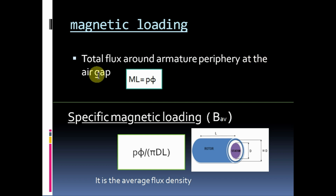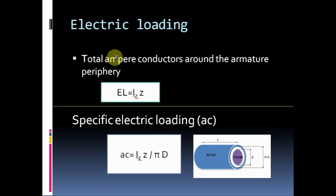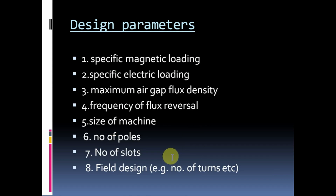Magnetic loading is the total flux around armature periphery at the air gap. ML equals P into Phi. Specific magnetic loading, B_av, is the average flux density: B_av equals P·Phi divided by pi·D·L. Electric loading is the total ampere conductors around the armature periphery: EL equals Iz into Z. Specific electric loading AC equals Iz·Z divided by pi·D.